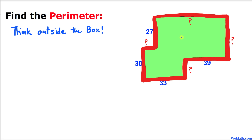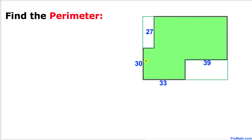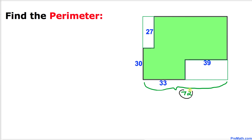Here's our very first step: let's pretend that this shape is a whole rectangle. Then we can see that this whole side length is going to be 33 plus 39, which makes 72. So if this side is 72, then this side has got to be 72 as well.